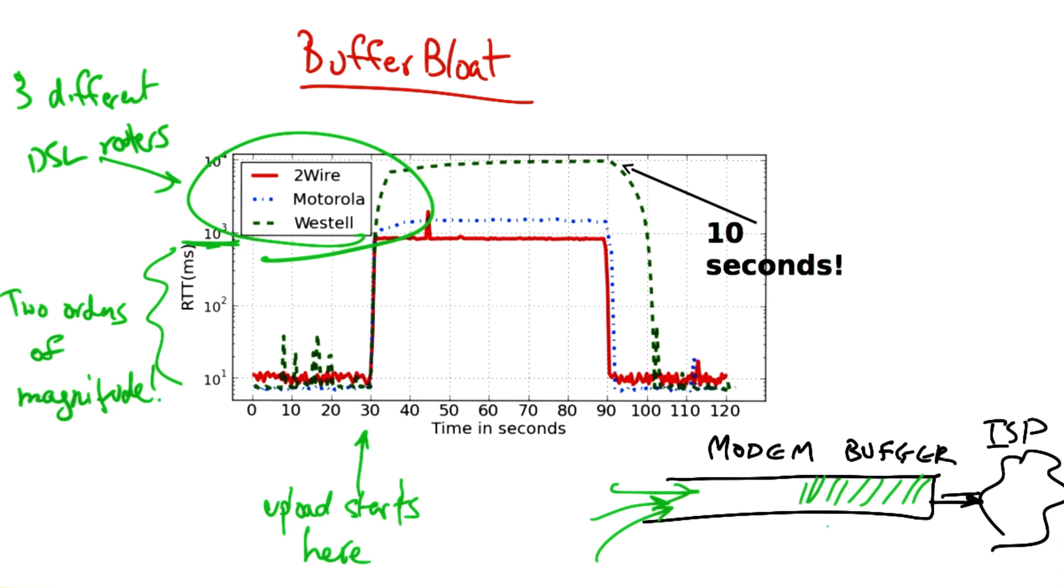The senders continue to send at increasingly faster rates until they see a loss. As a result, packets that are arriving in this buffer see increasing delays, and senders continue to send at faster rates because without packet loss, they don't have a signal to slow down.